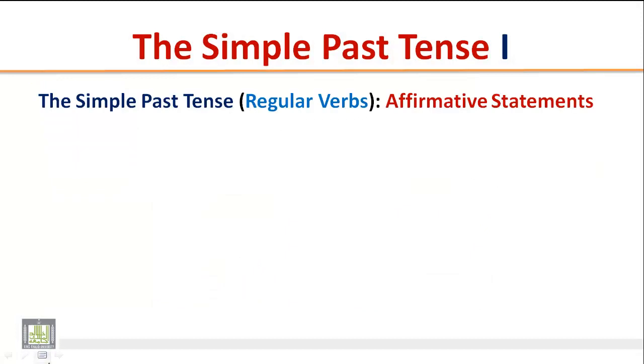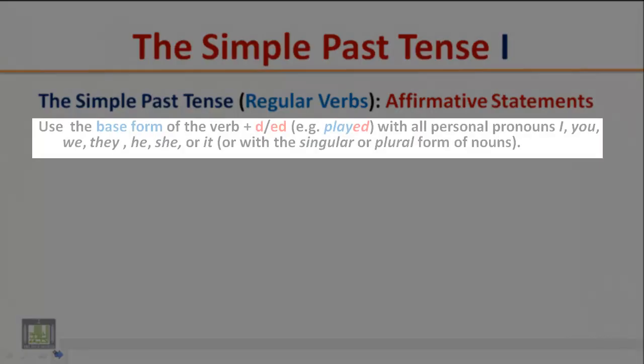The Simple Past Tense: Regular Verbs, Affirmative Statements. Use the base form of the verb plus D or ED, for example, played, with all personal pronouns I, you, we, they, he, she, or it, or with the singular or plural form of nouns.